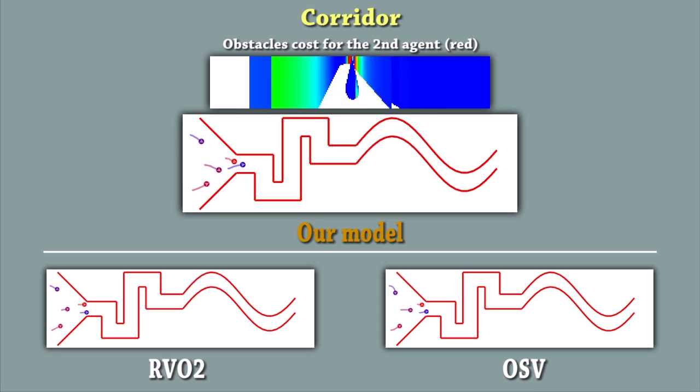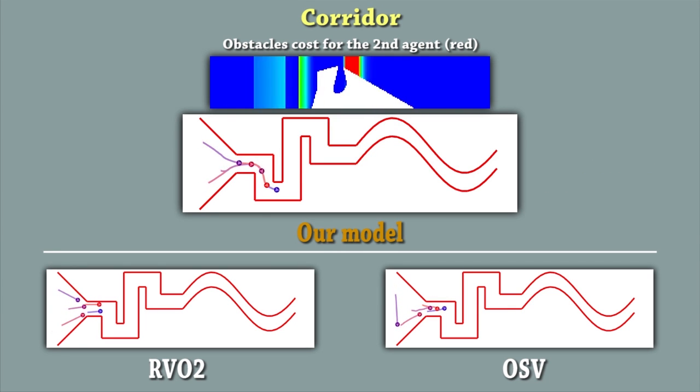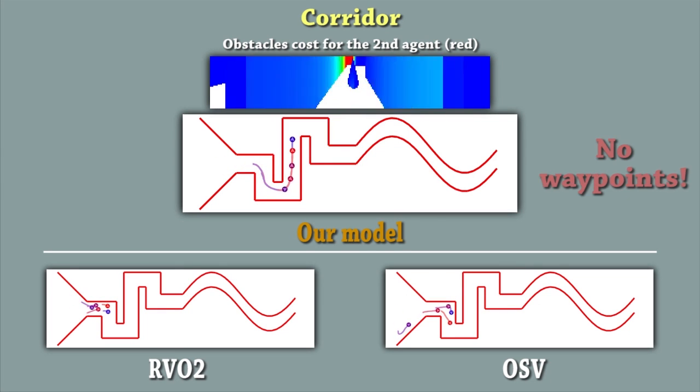Our new vision-based technique allows agents to be steered in complex environments which mix static and dynamic obstacles. We compare our results to OSV and RVO2. In this first example, the agents need to traverse a sinuous corridor to reach their goals. The obstacles cost computed by the red agent is shown at the top.